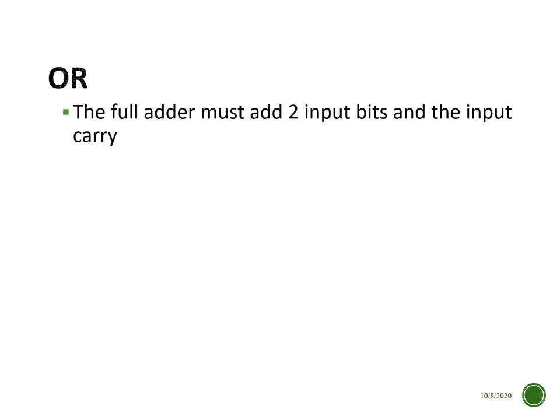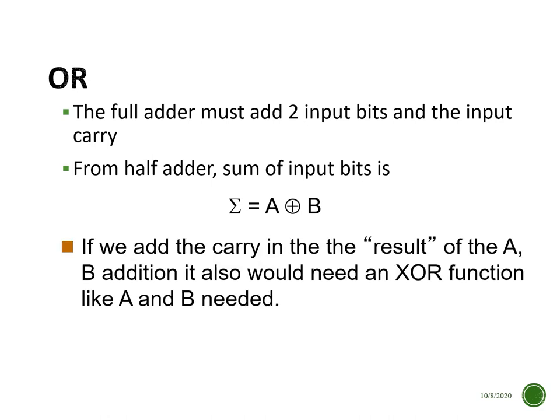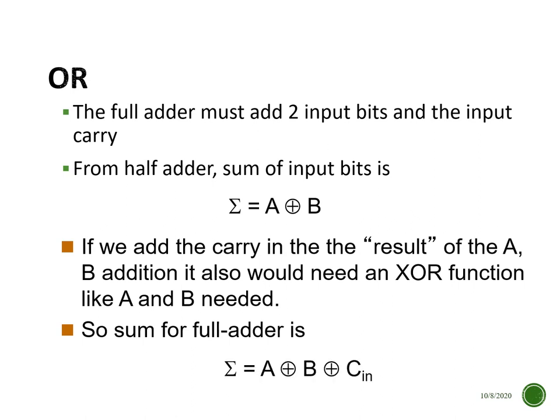We can also deduce this logically: since the half adder uses XOR for the sum of two bits, and the full adder adds three bits, we extend XOR to all three — giving A XOR B XOR Cin as the sum. This makes intuitive sense: if exclusive OR was needed for the half adder, then for the full adder adding three bits we need exclusive OR across all three bits.